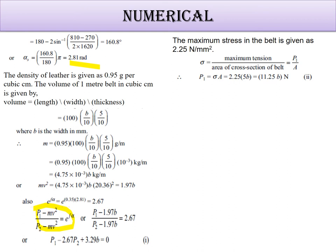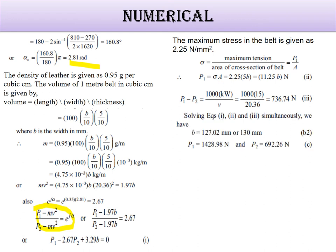Put the value of P1 in the equation. P1 minus P2 equals 1000 times power over velocity, which is 736.74 Newton. Solving equations one, two, and three, you will get b, P1, and P2.